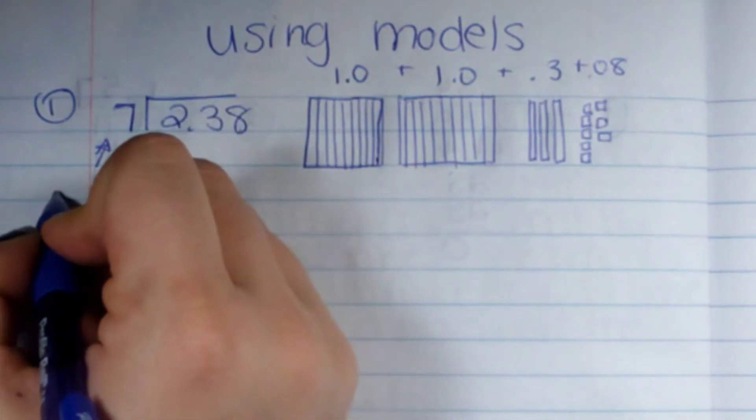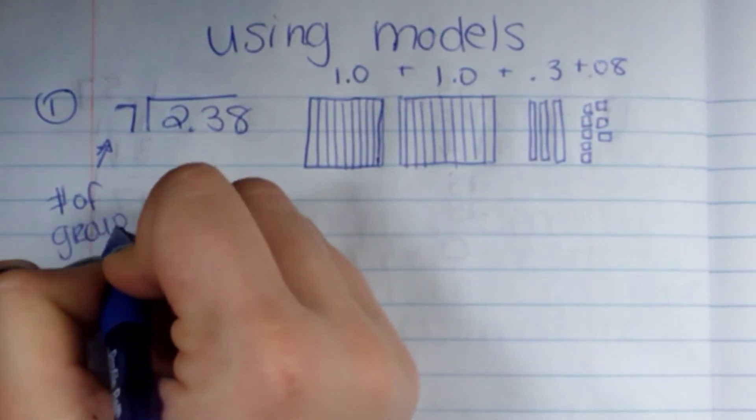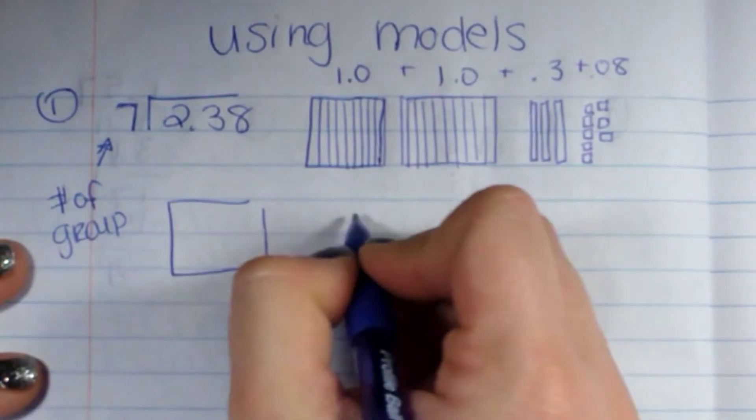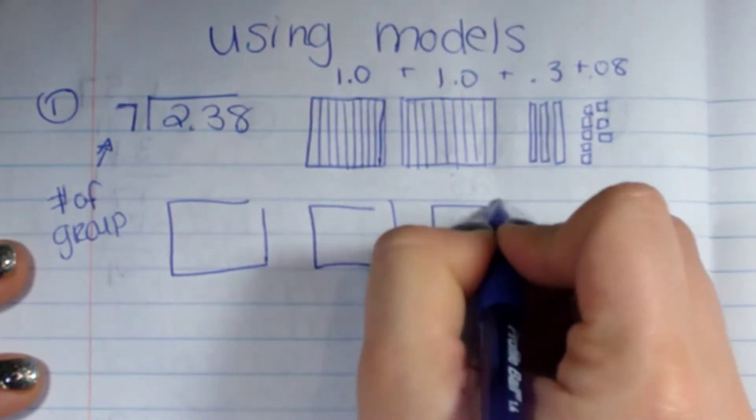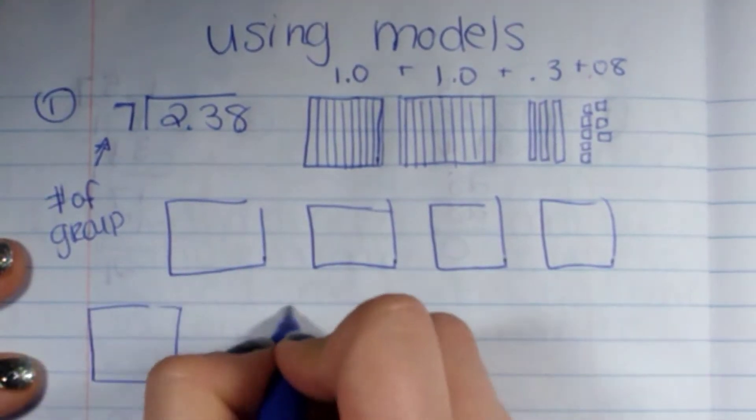This is going to tell me the number of groups, so I'm going to pretend like I'm dividing two and thirty-eight hundredths amongst seven groups.